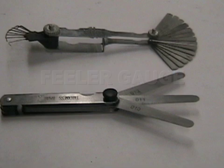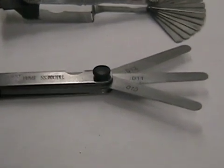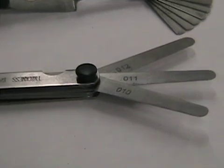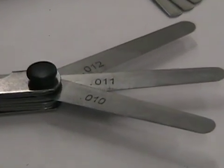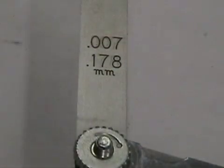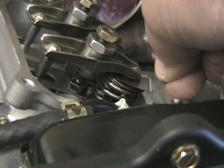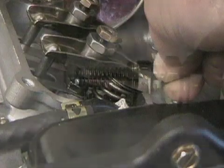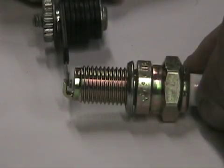Feeler gauges are used to measure small spaces between parts. They can have flat or round blades and the thickness of each blade is marked on each blade in both metric and standard. Flat feeler gauges are commonly used to measure valve clearances and round feeler gauges are commonly used to measure spark plug gaps.